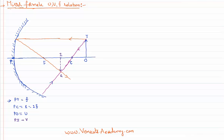So the distance between the pole and the image, let us call it v. Now we need to find the relation between u, v, and f. Let me call this point Q. If I draw a perpendicular line downward — being a thin lens, this is also going to be very close to P. If the object size is h, this size is also equal to h, so I can write OJ = PQ = h. Let the image size be h-dash.